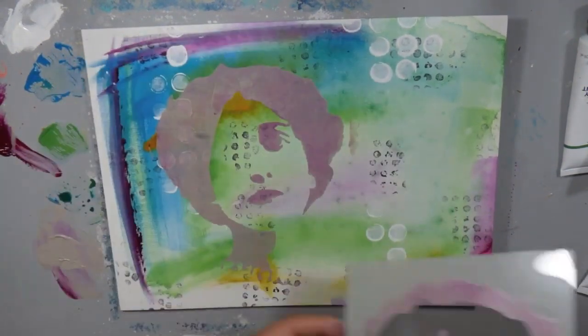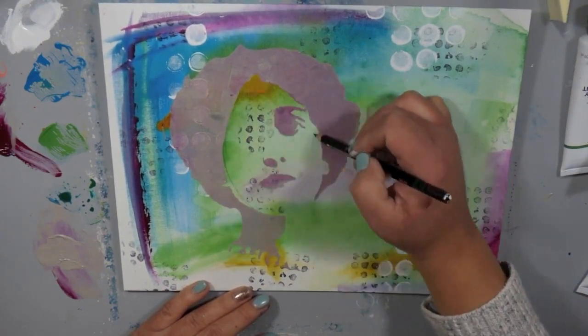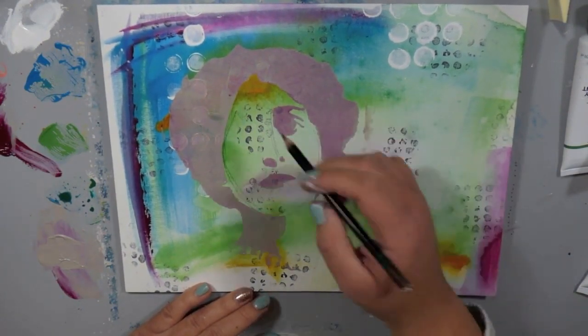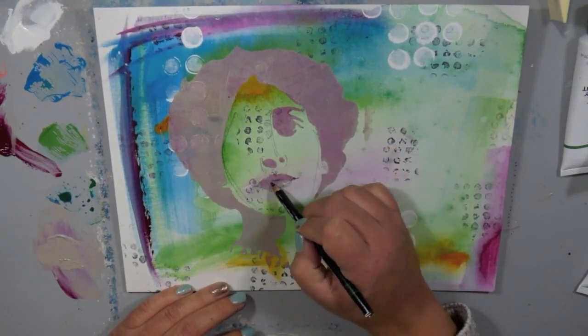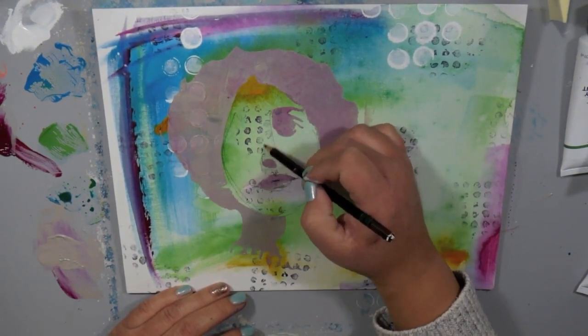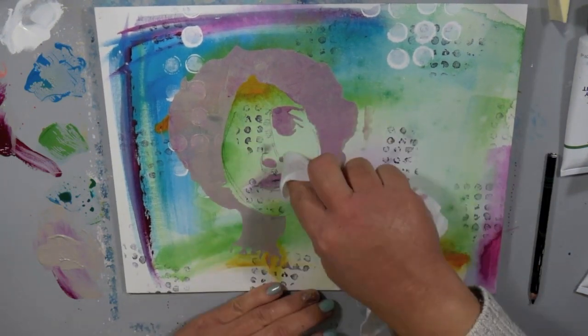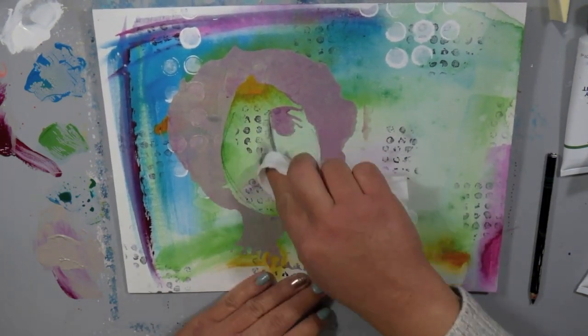Now once I have this completely on there and it's dry sort of, I came in with a Stabilo All pencil and this is a water-based pencil and I was trying to do some light sketching to kind of define some of the areas and I totally messed up on her nose. I tried to wipe it away and I made it worse.